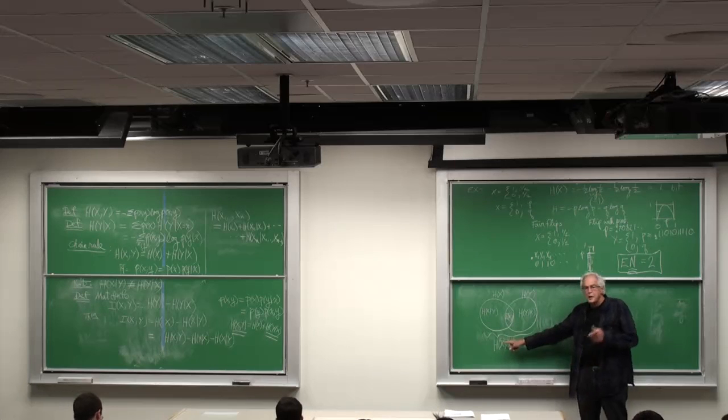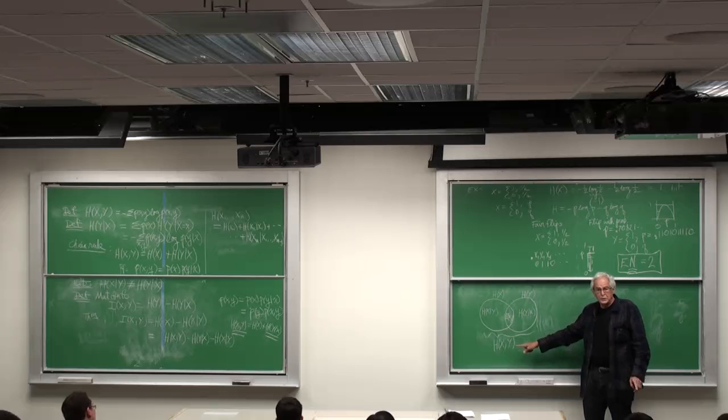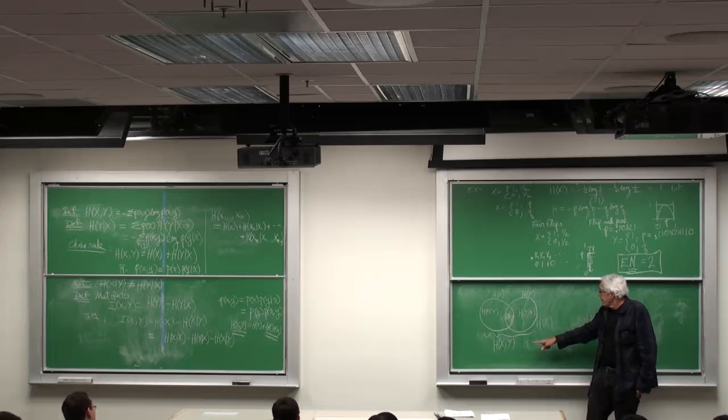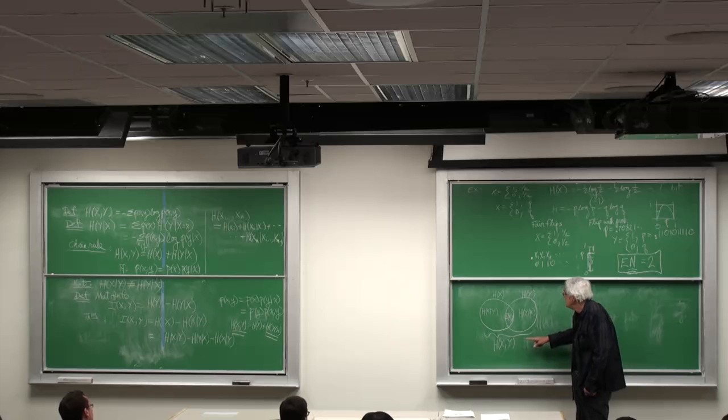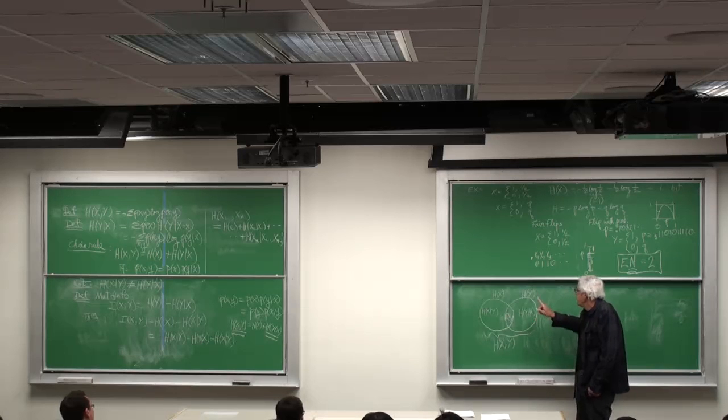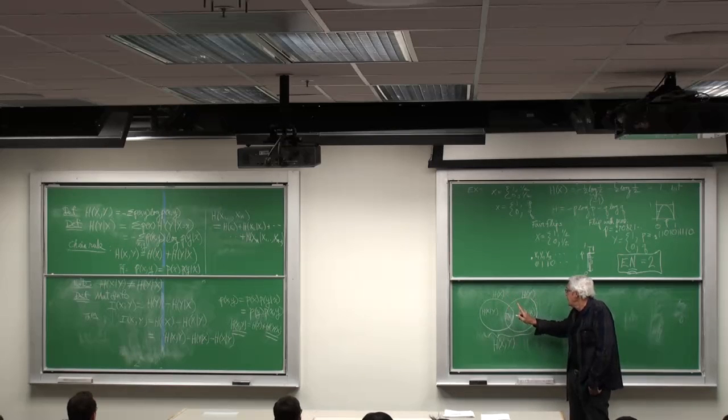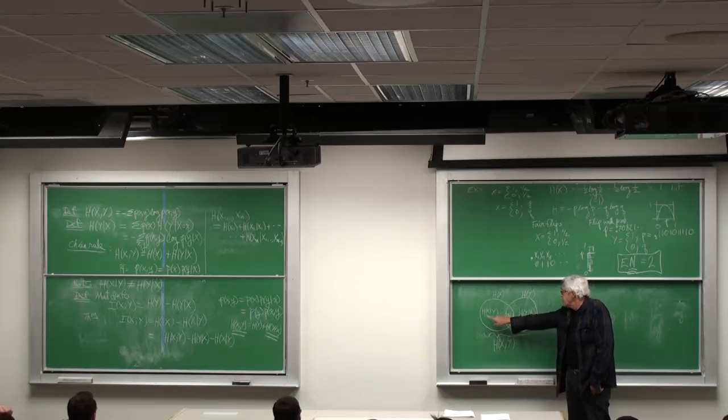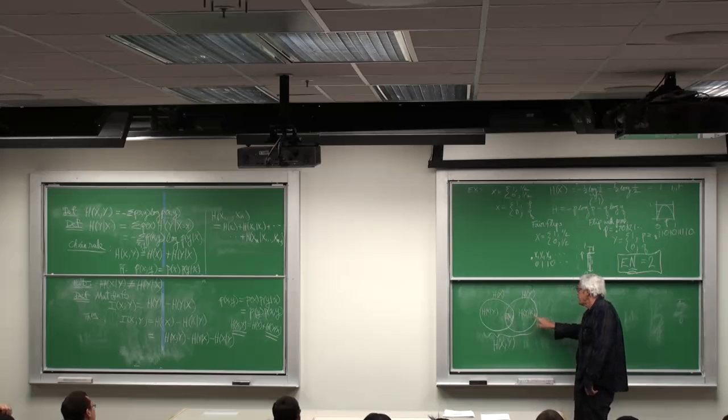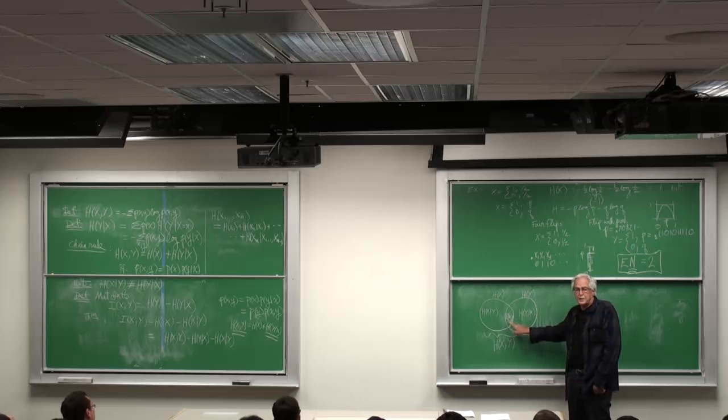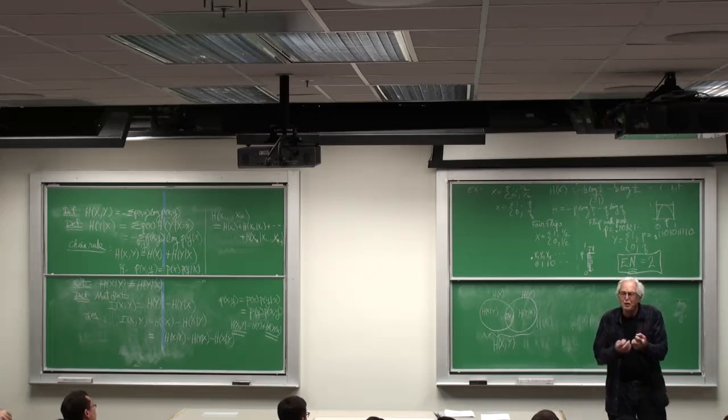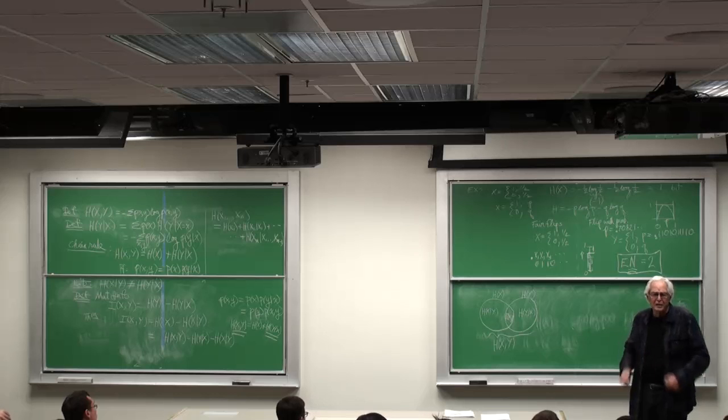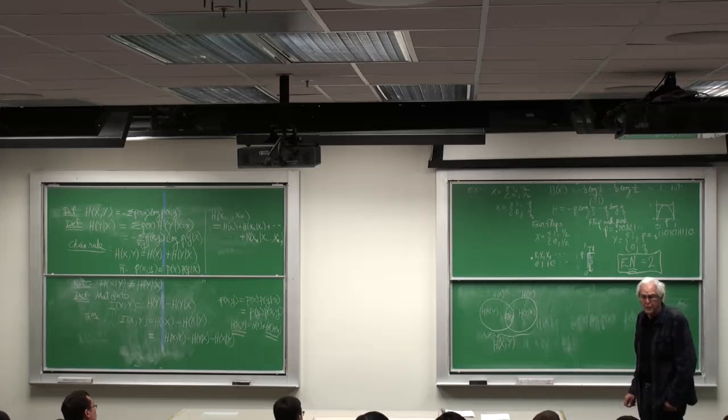So the entropy of a pair of random variables is this conditional entropy plus this conditional entropy plus the mutual information. You see, that mutual information is sort of the degree of dependence of X and Y.